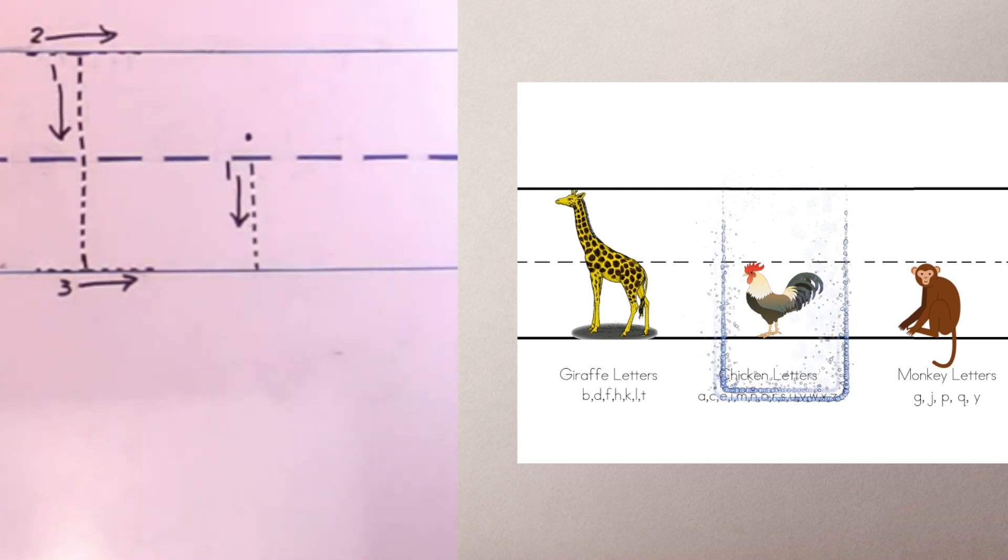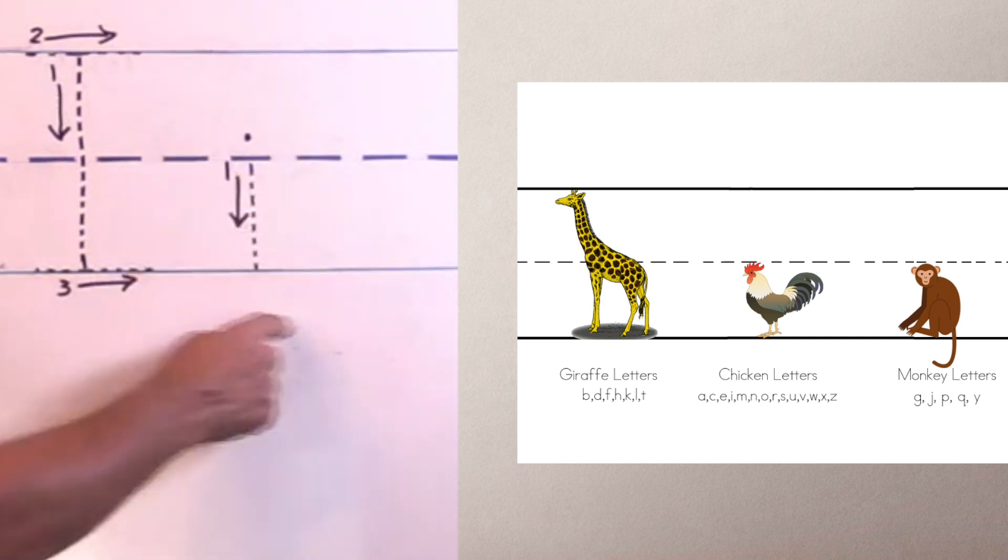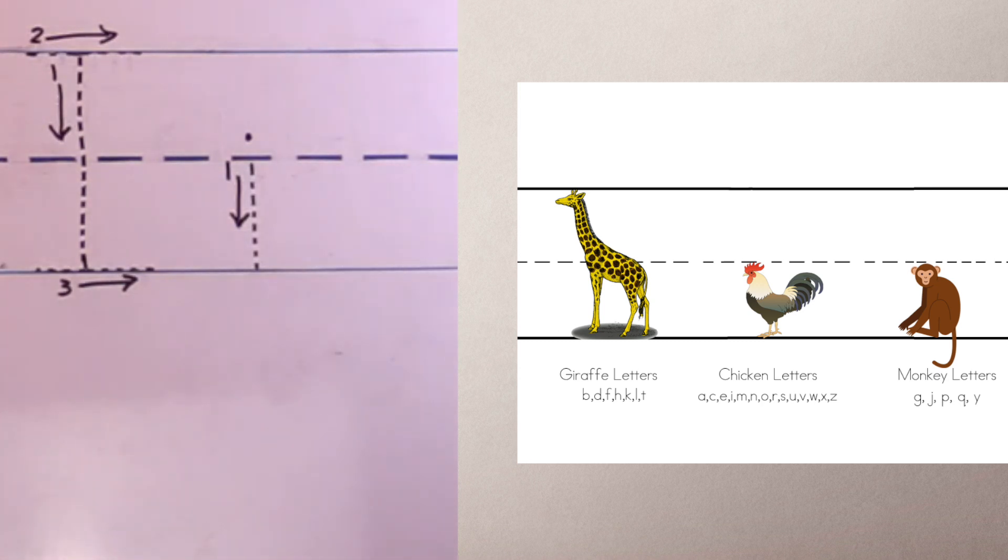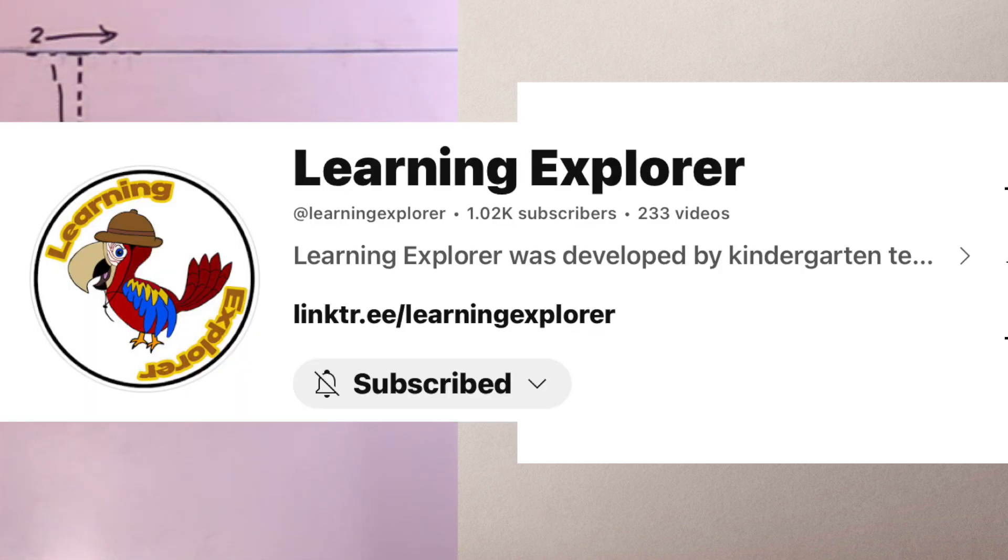I'm showing you how to write both uppercase and lowercase letters. However, I want to focus on how to write lowercase letters because it's what we use most when we write. When we write each letter, we do it two times. The first time is with the dotted letters, and the second time is all by ourselves without the dotted letters. And that's fun. Remember, you can download our letter template off our link tree.